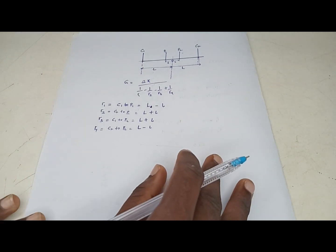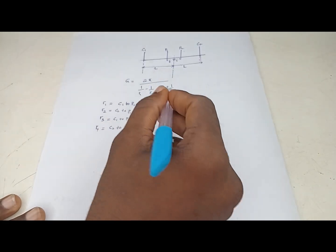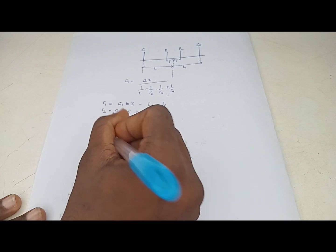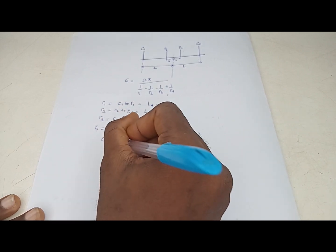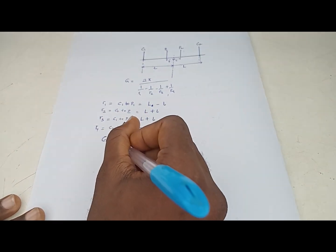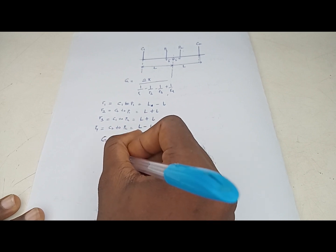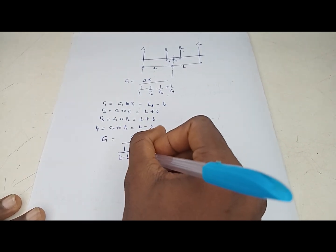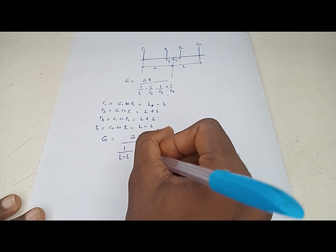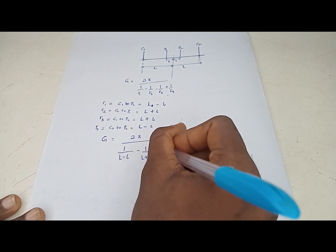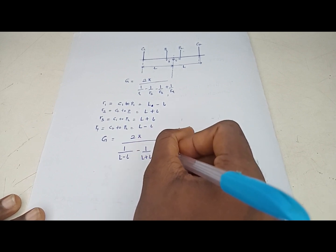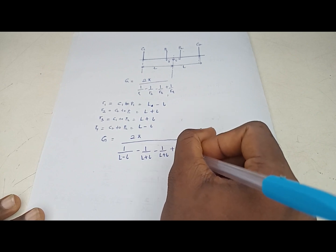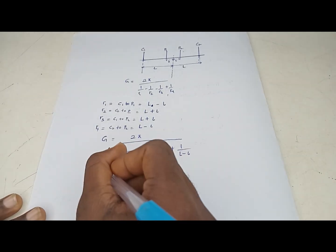Now we substitute all values into the geometric factor equation: G equals 2π over [1/(L - l) minus 1/(L + l) minus 1/(L + l) plus 1/(L - l)].